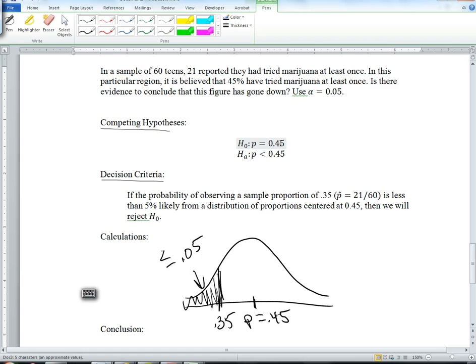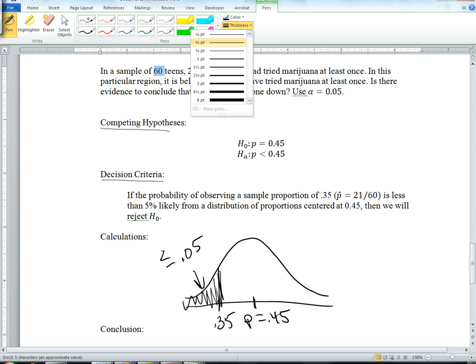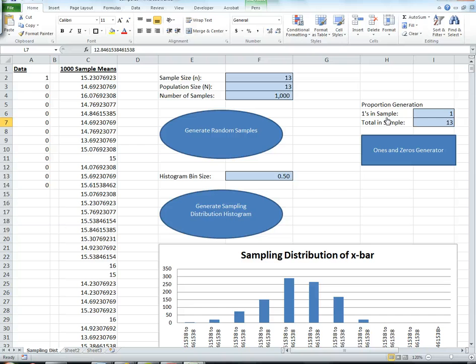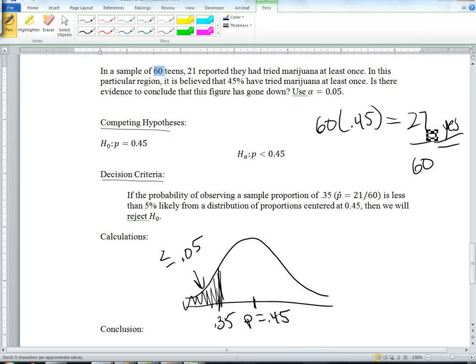This is based on if we had 60 teens and 45% of them had tried marijuana, the question is how many 1s and 0s would we have? We would have 60 times 45%, which is going to give us 27 yeses. So 27 have tried marijuana out of the total 60 who are there.